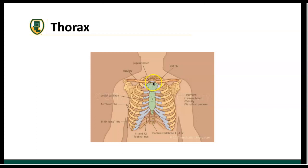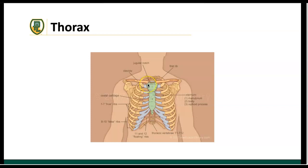Within the manubrial body, we have an indent called the jugular notch. You might notice the clavicle — we'll talk about it more in the upper extremity — but the most medial portion of the clavicle does articulate with the thorax, specifically with the sternum. So we have a joint called the sternoclavicular joint, represented right here.